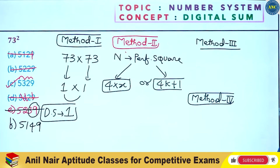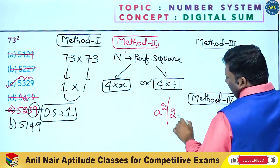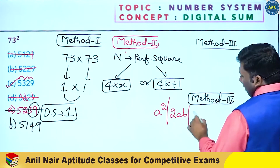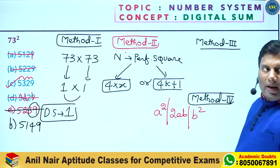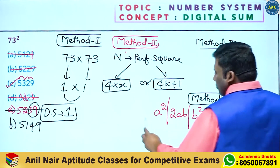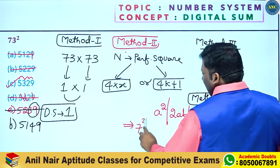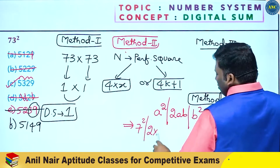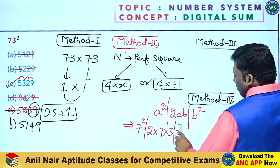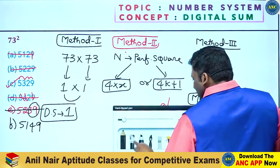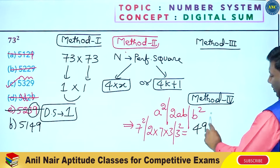Method 4: Use the (A plus B) whole square formula — A square plus 2AB plus B square. So A square, next is 2AB, and next is B square. Here: A is 7, B is 3. A square is 7 square equals 49.